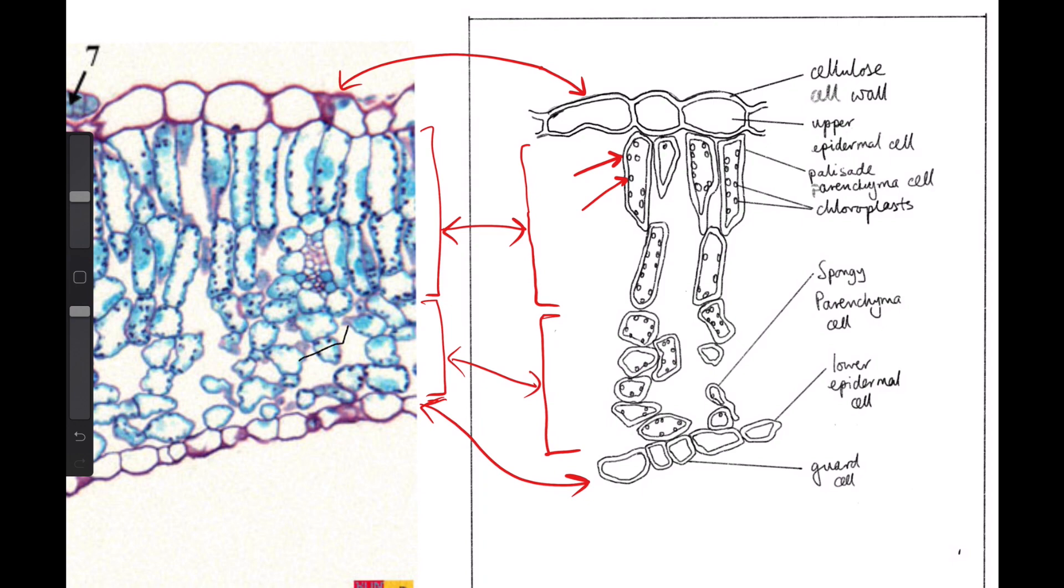I just wanted to highlight also that we are now labeling distinct structures. So here we have cellulose cell wall, not just the tissue. So in the previous diagram, we were labeling upper epidermis, because that was a tissue.